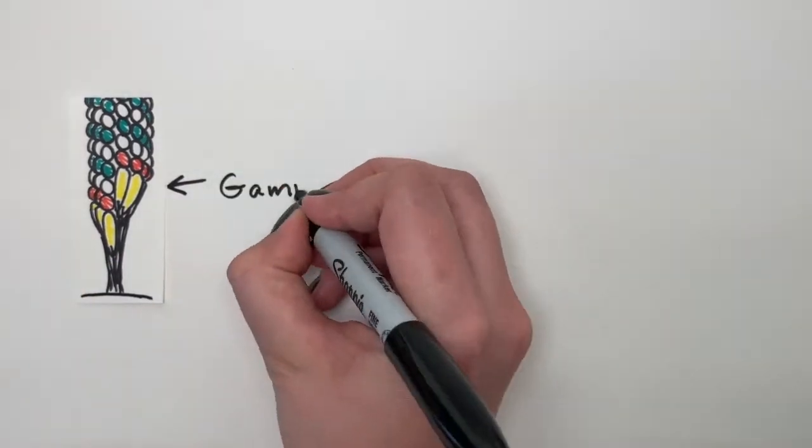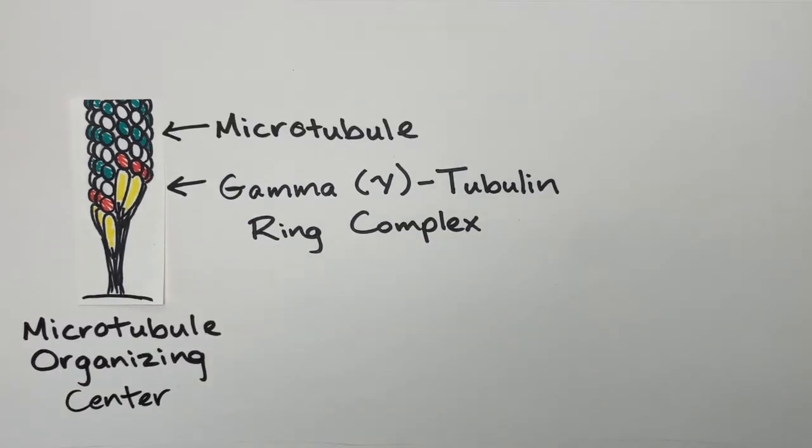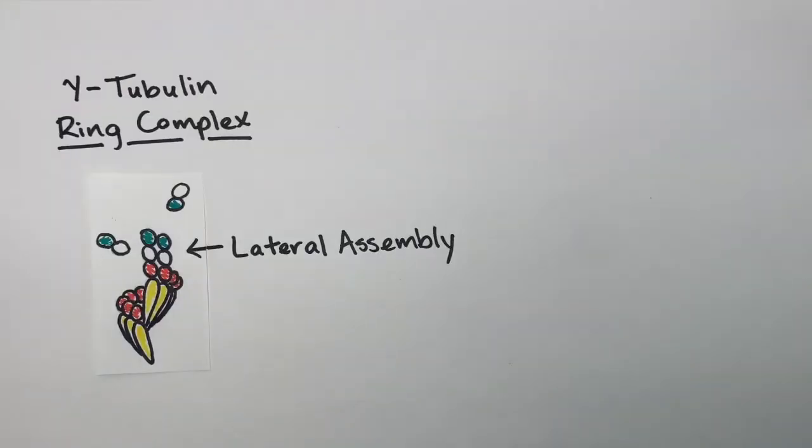One complex that is crucial for microtubule nucleation is the gamma tubulin ring complex. This is the complex that anchors microtubules to the microtubule organizing center of the cell. The gamma tubulin ring complex functions as a template. It presents a 13-member gamma tubulin ring onto which tubulin dimers assemble laterally.